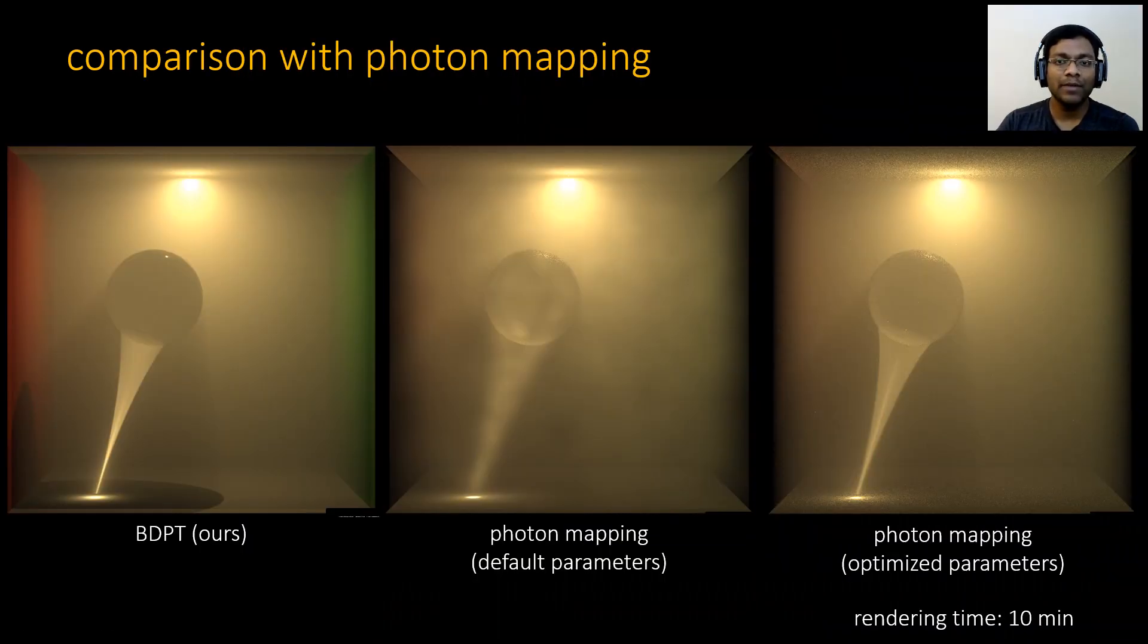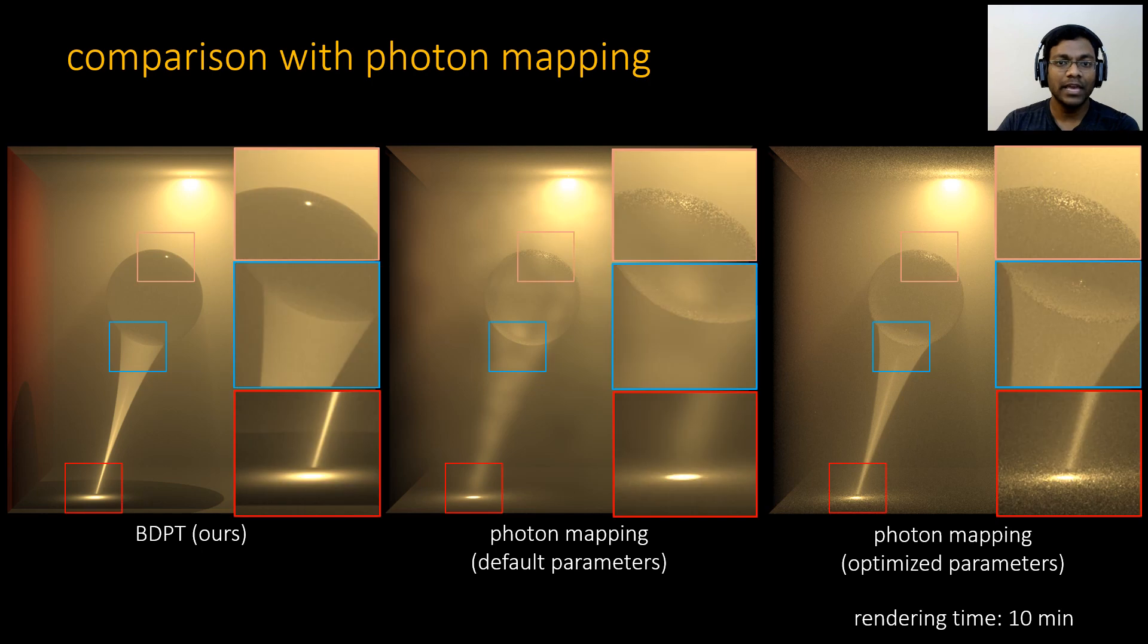In the past, photon mapping was used to solve RRTE. Photon mapping is a biased technique that requires hyperparameter tuning. On the left, we have BDPT, and in the middle, we have photon mapping with default parameters for the same rendering time. After rigorously fine-tuning the parameters for several iterations, we have obtained the result on the right, which still has some noise and blotch artifacts. Here are some insights for better visualization.